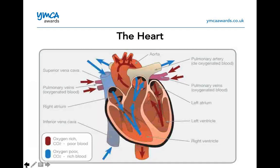Going back to the heart diagram: you've got your pulmonary veins — oxygenated blood goes in. The pulmonary artery takes the deoxygenated blood out.